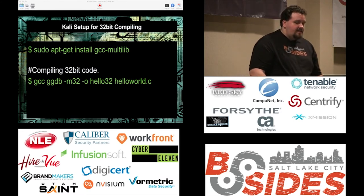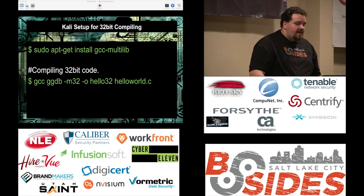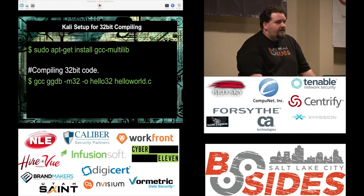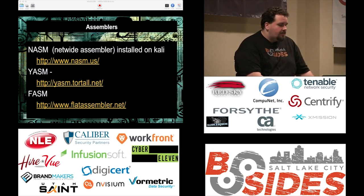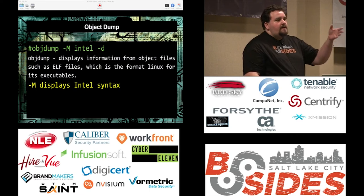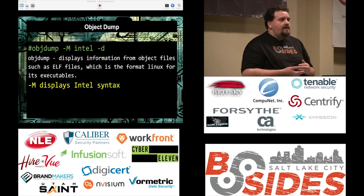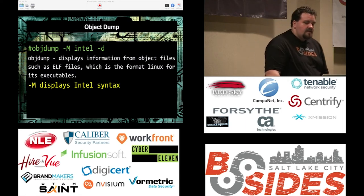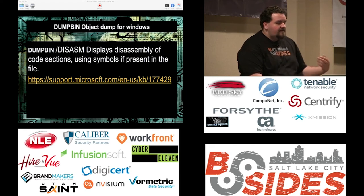Quick setup for Kali — I did all of this in Kali. To compile 32-bit binaries in Kali, you need GCC multilib and then compile with -m32. NASM is installed automatically on Kali, but there are other assemblers if you want to play around. Object dump is a very useful tool — it takes the binary and breaks it out into its hex version and its assembly version, so you can just take the sections of code you're most interested in. Dump bin is the Windows equivalent.